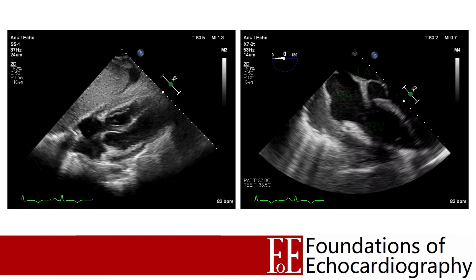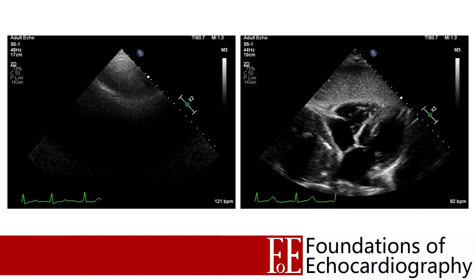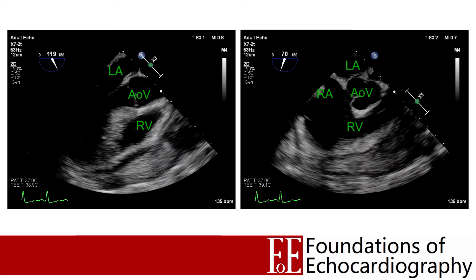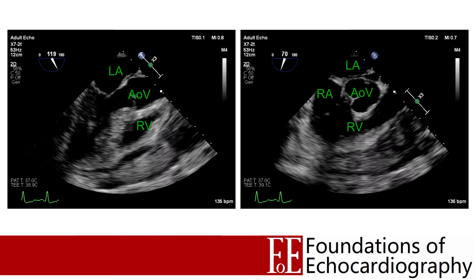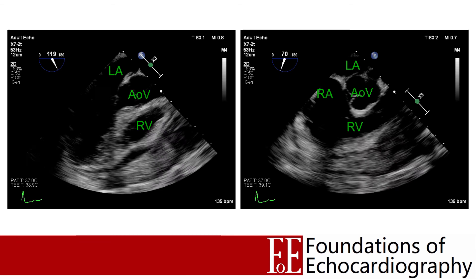Two further cases involve intrathoracic cancers. The first shows TTE apical four-chamber and subcostal views demonstrating a mass causing external compression of the right atrium. The second shows TOE clips from a young patient with mediastinal lymphoma — a mid-oesophageal long axis view and an RV inflow-outflow view — demonstrating tumour bulk compressing the right ventricle at the level of the right ventricular outflow tract.